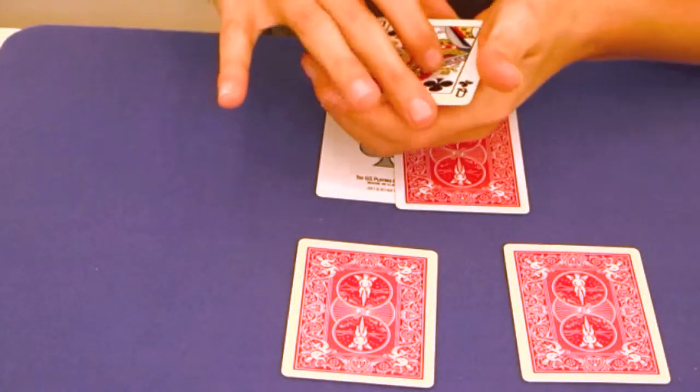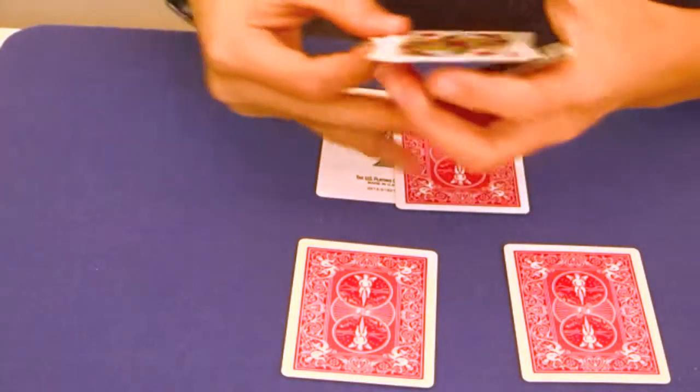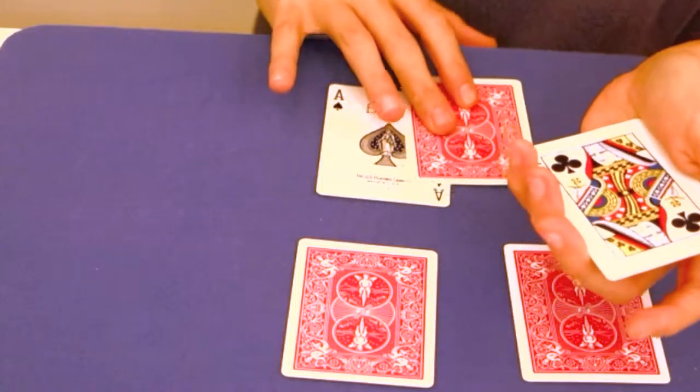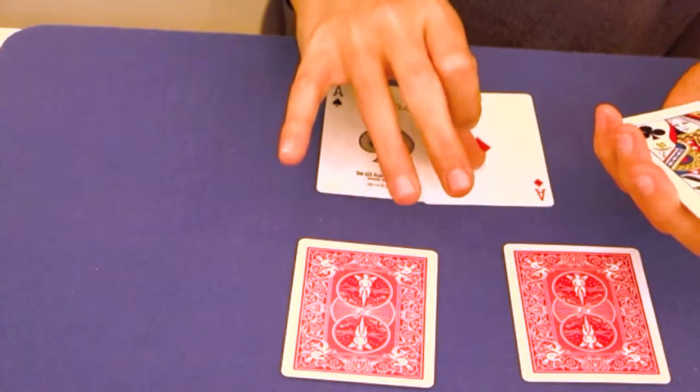As you can see, I'm going to make it disappear. 1 queen, 2 queens, 3 queens, 4 queens. What is it? It moved. It's now here.